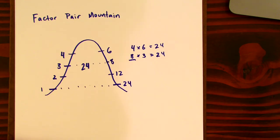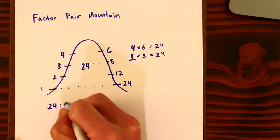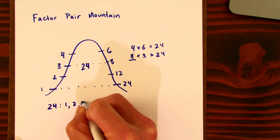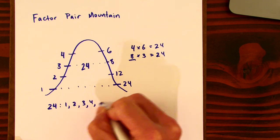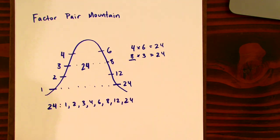So Factor Pair Mountain just helps us be systematic and organize our way to finding the factors for a particular number. So we might write these out as 24 has factors: one, two, three, four, six, eight, 12, and 24. And you can do this with any number.